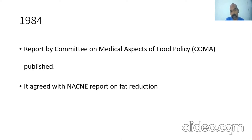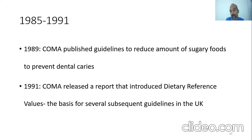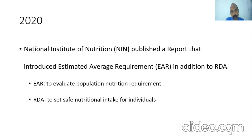The COMA report of 1984 agreed with NACNE on reducing fat in the diet. In 1989, COMA published guidelines to reduce sugary foods to prevent dental caries, and in 1991 it released a report introducing Dietary Reference Values as the basis for subsequent UK guidelines. As far as India is concerned, in 2020 the National Institute of Nutrition published a report introducing the Estimated Average Requirement, or EAR, alongside RDAs, to evaluate population nutrition requirements.